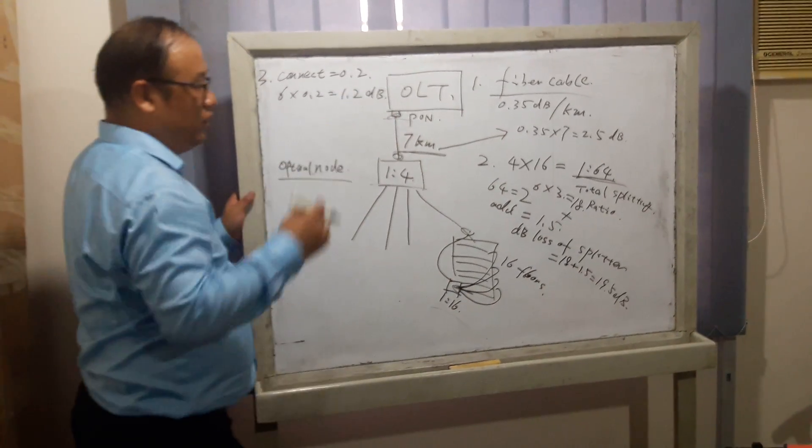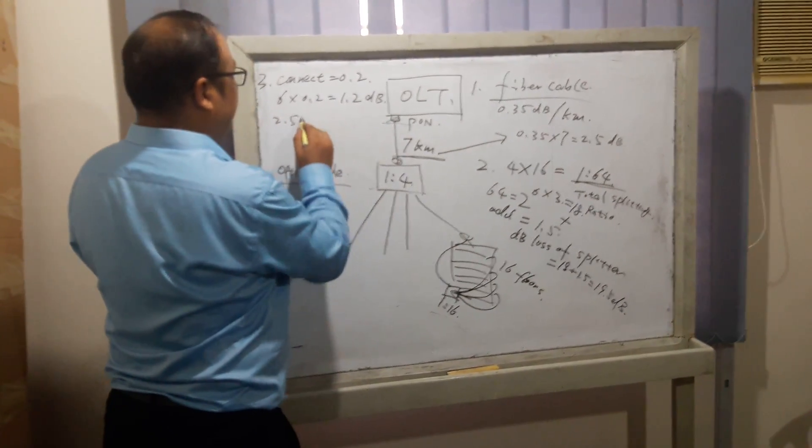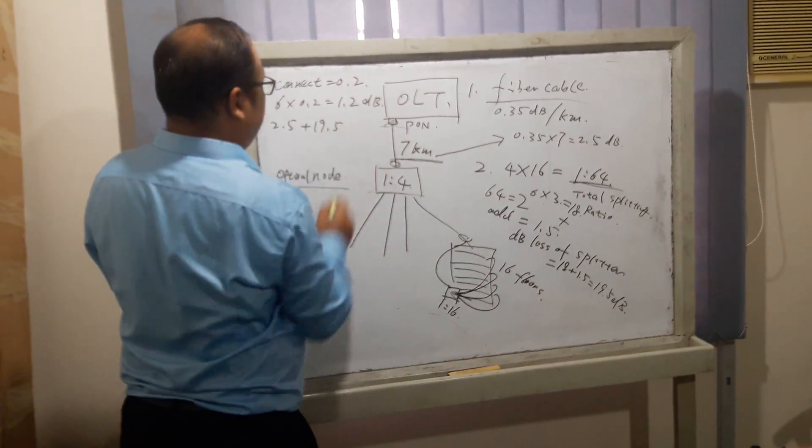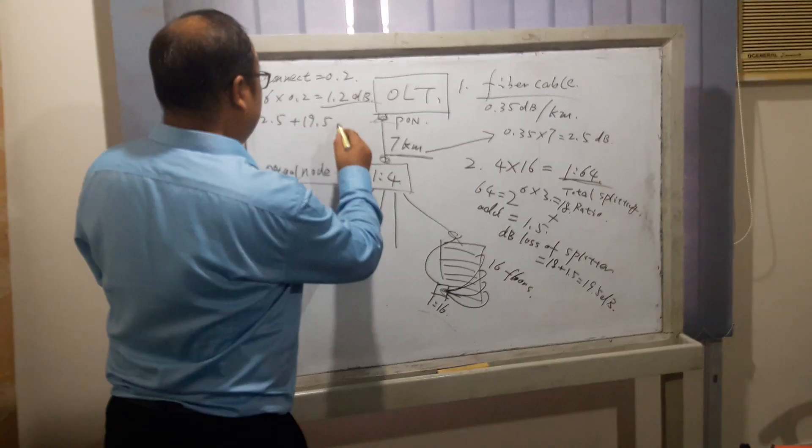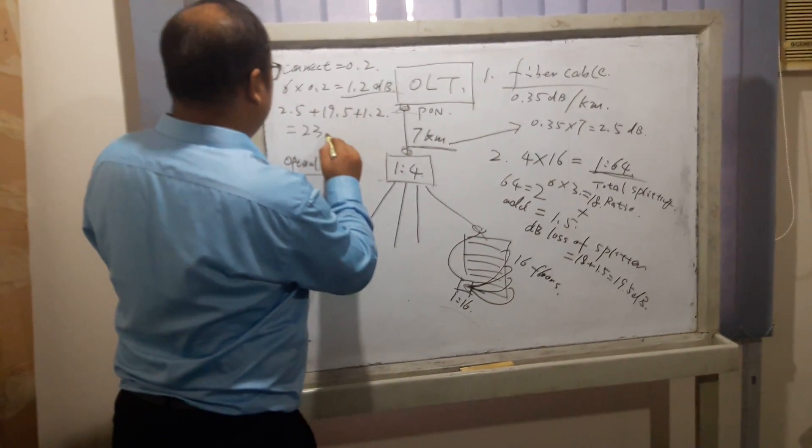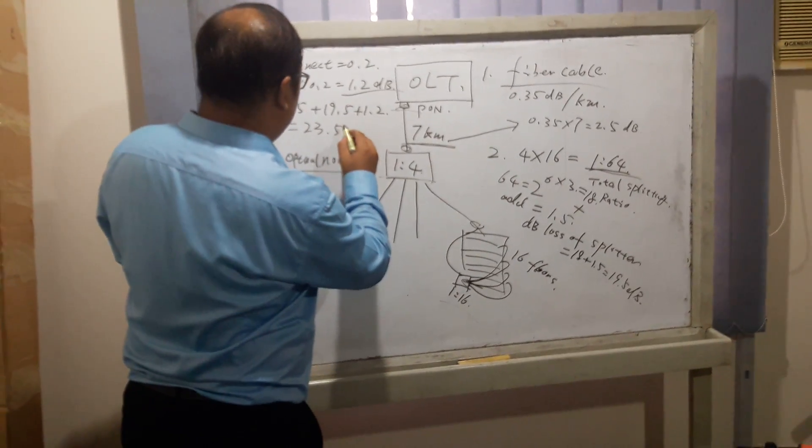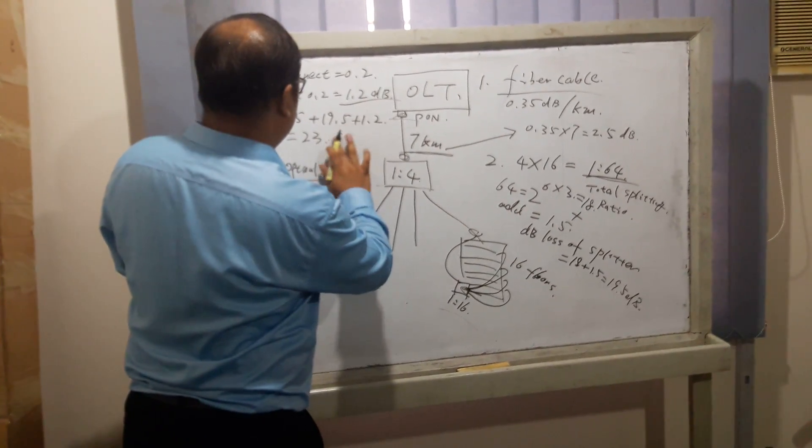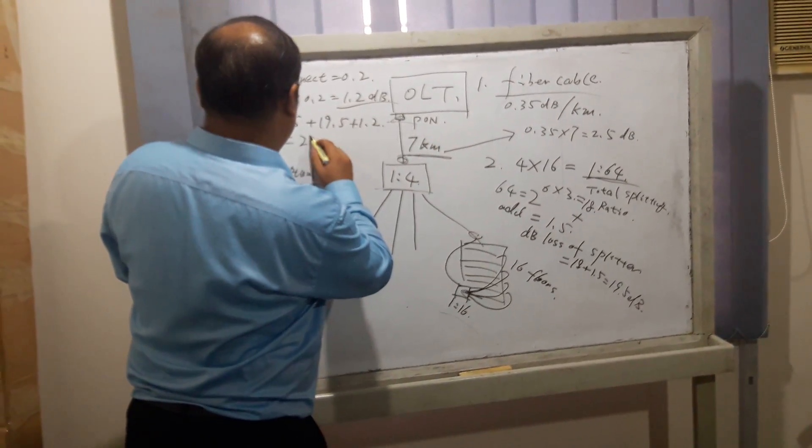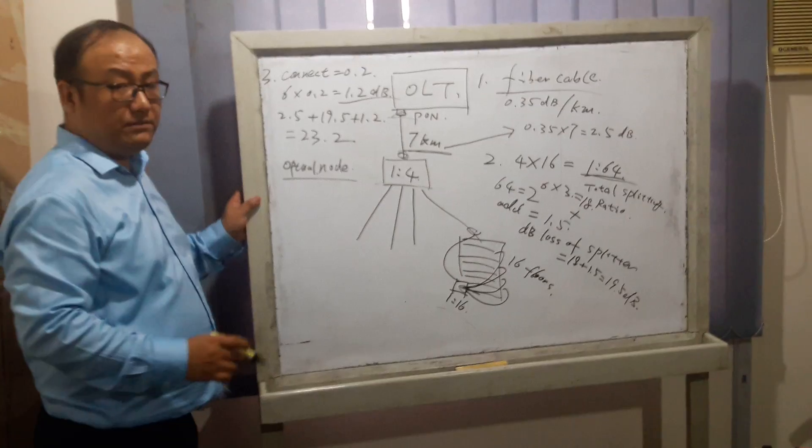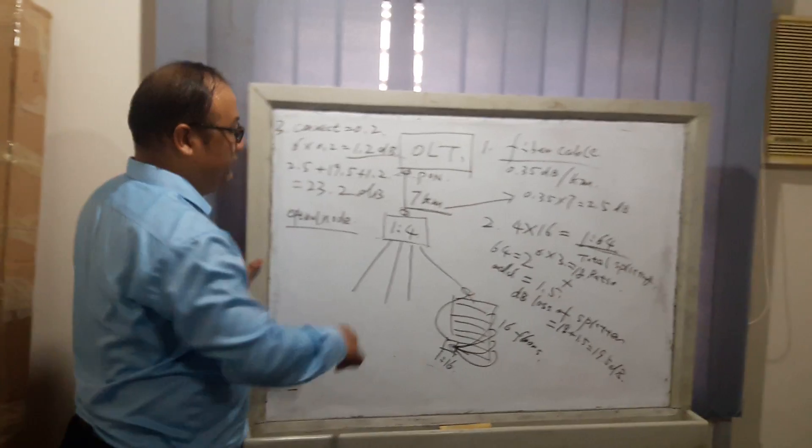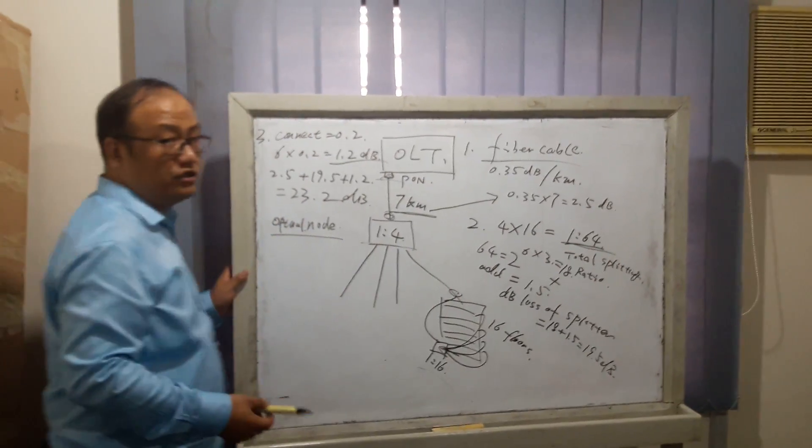So we sum them all. The fiber: 2.5 dB. The splitter: 19.5 dB. And the connectors: 1.2 dB. This totals 23.2 dB. That's the total attenuation of the whole distribution system.